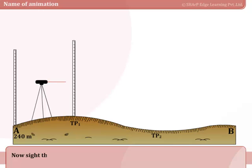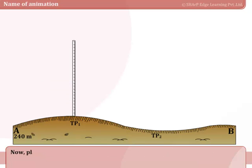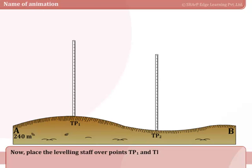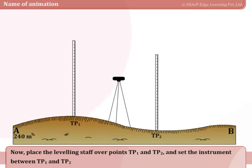Now sight the leveling staff at point TP1 and take the foresight, say 1.42 meters. Now place the leveling staff over points TP1 and TP2 and set the instrument between TP1 and TP2.